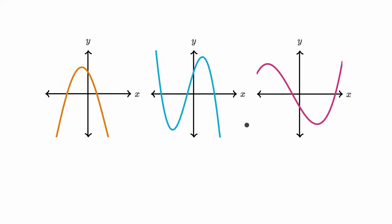We have the graphs of three functions here. One of them is the function f, another is the first derivative of f, and the third is the second derivative of f. Our goal is to figure out which function is which — which one is f, which is the first derivative, and which is the second.